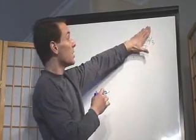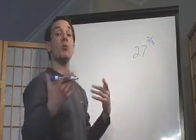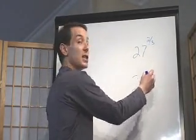You have the top number, 2, and the bottom number, 3. The top number, the 2, is just like a normal power, so that's like saying 27 to the second power.